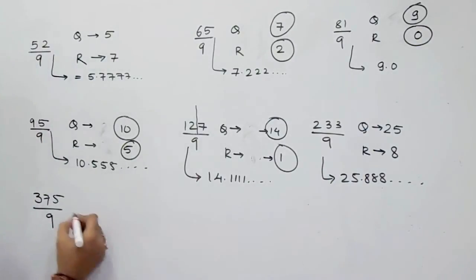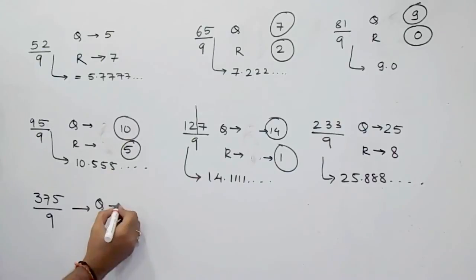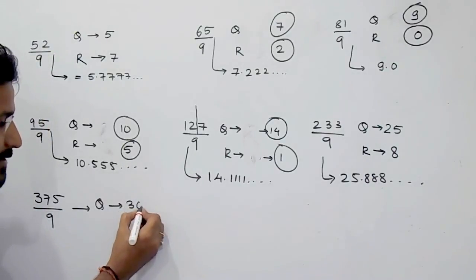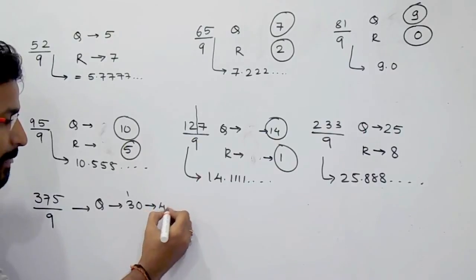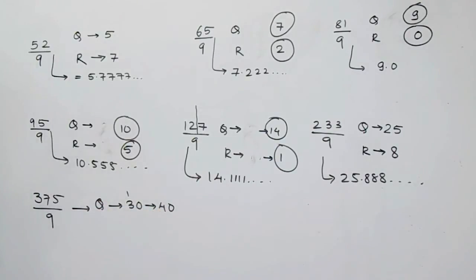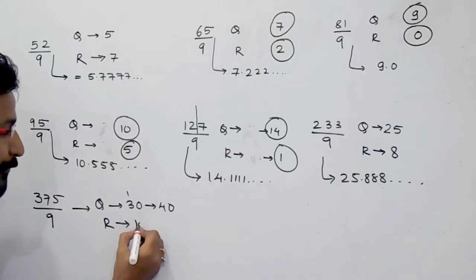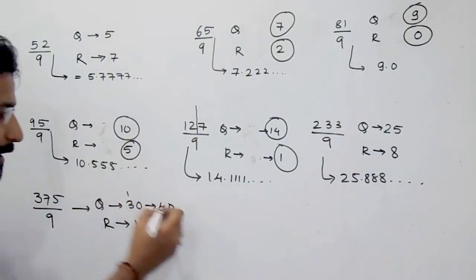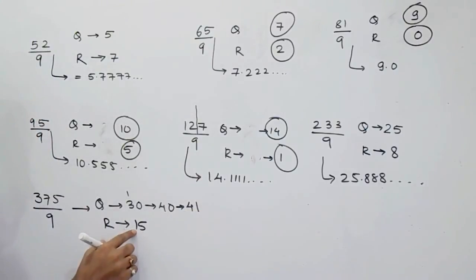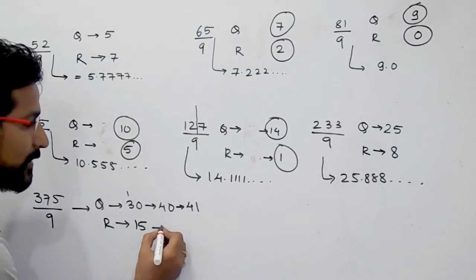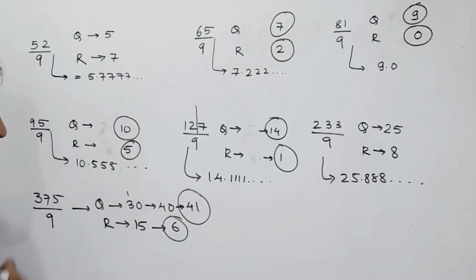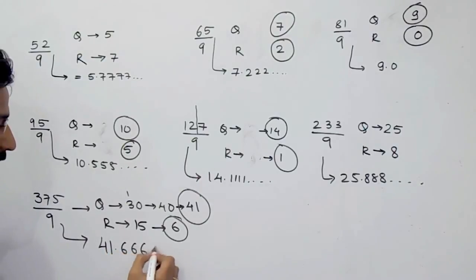375 divided by 9. For the quotient: write 3 as it is, then 3 plus 7 is 10 — a 2-digit number, so write 0 here and carry 1, making it 40. For the remainder: 3 plus 7 is 10, then 10 plus 5 is 15. Since 15 is greater than 9, increase the quotient by 1 — 40 becomes 41 — and 15 minus 9 is 6. So the quotient is 41 and the remainder is 6. The answer is 41.666 and so on.